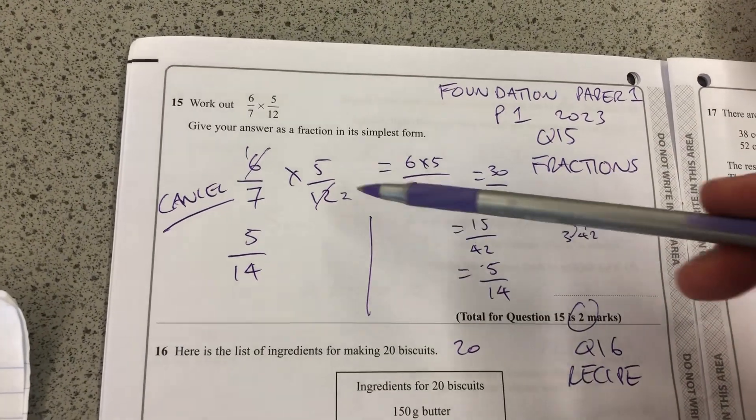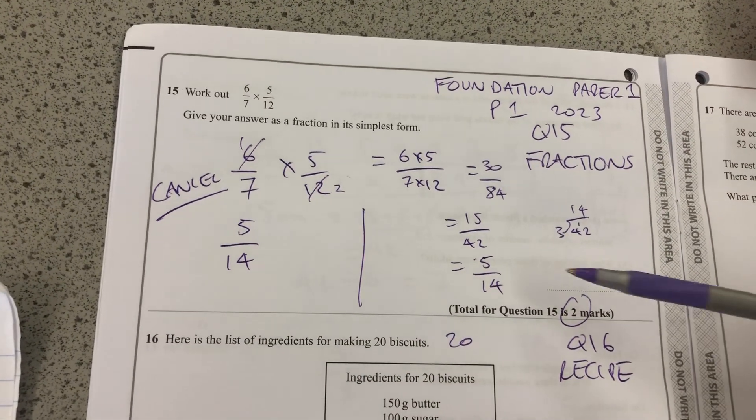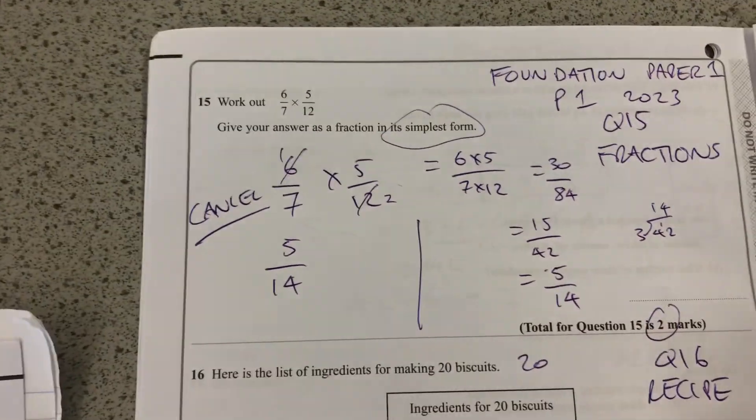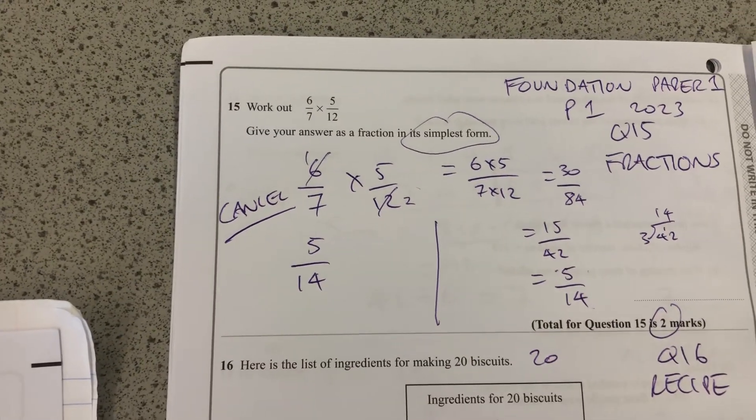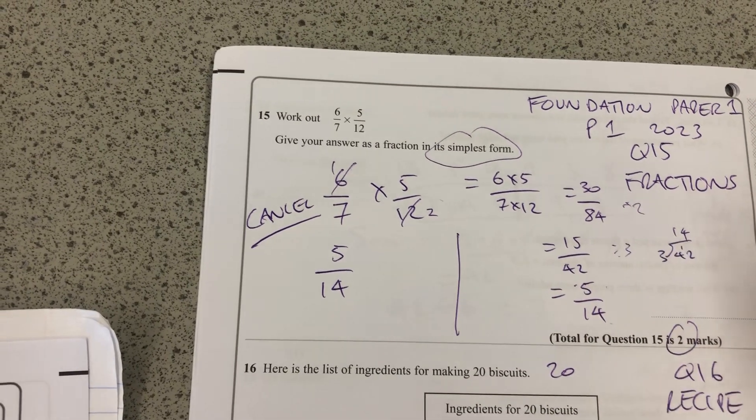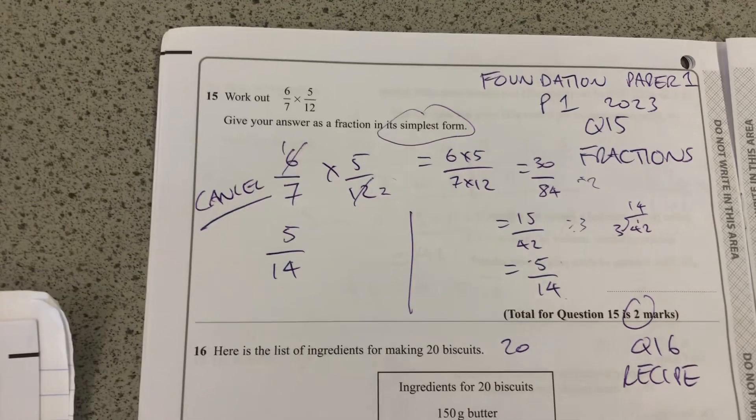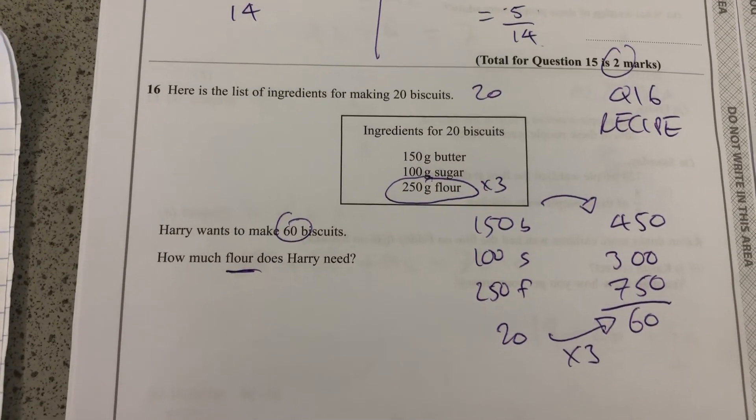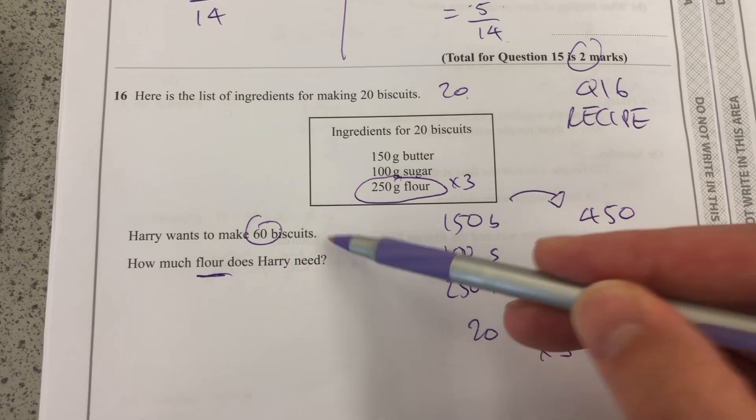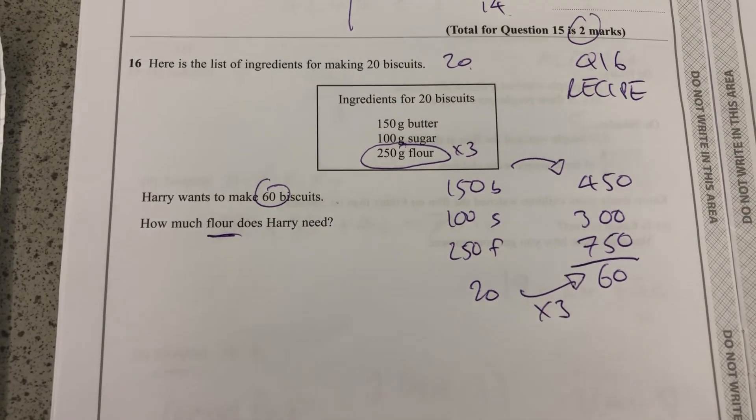Okay, so fractions: multiply across, or I prefer cancelling. Simplify that as far as you can because it does say in its simplest form. There are no more common factors there, but I could divide that side by 2 and that side by 3, or 6 if you can do it. And then here, just scaling up a recipe. From 20 to 60 is timesing by 3, so timesing each of those by 3.